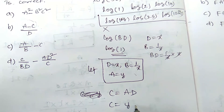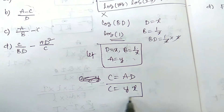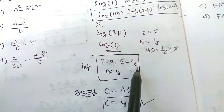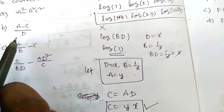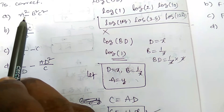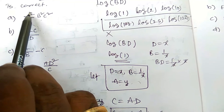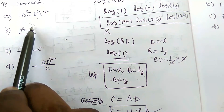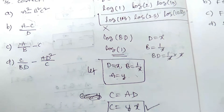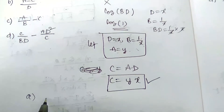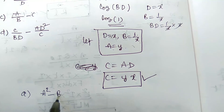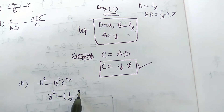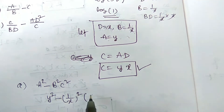From the equation A·D = C·log(B·D): since log(B·D) is dimensionless, C must equal A·D in dimension. Let D = x and A = y. Then C = A·D = y·x. Also B = 1/x. So our assumed values are: A = y, B = 1/x, C = xy, D = x. Now substitute these into each option to check dimensional consistency.